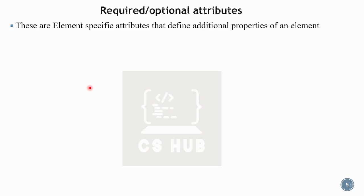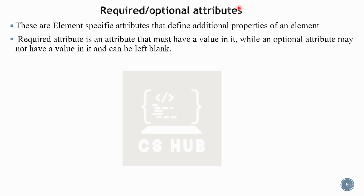Required and optional attributes are element-specific attributes that define additional properties of an element. Required attributes must have a value — without a value, the element may not work correctly. Optional attributes are specific to certain elements and do not apply to all elements. Optional attributes are optional and depend on the specific element being used.